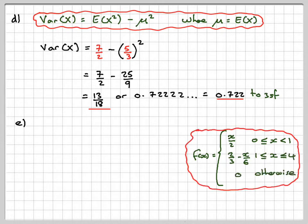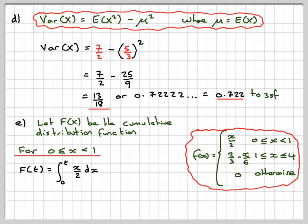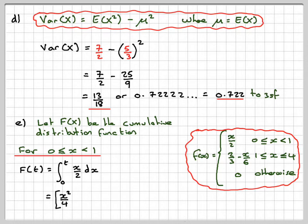Now we calculate the cumulative distribution function. Let capital F of x be the cumulative distribution function. You integrate and split it into different parts. From 0 to 1, we introduce a dummy variable t and integrate x over 2 dx from 0 to t. Integrating gives x squared over 4 from 0 to t, and putting in the limits gives t squared over 4 minus 0, which is just t squared over 4.